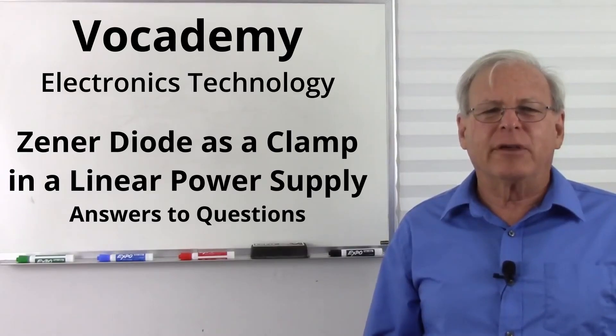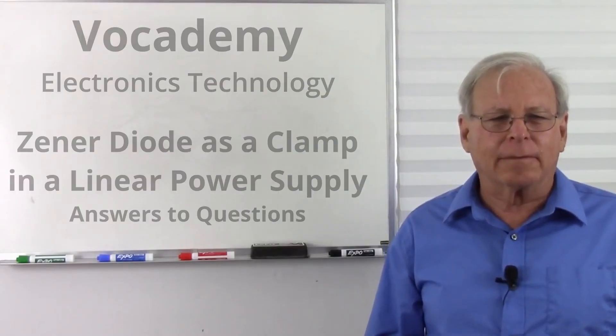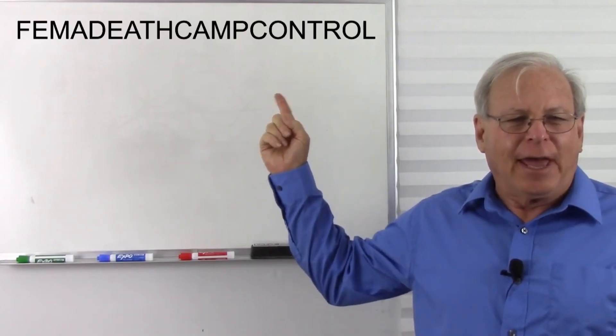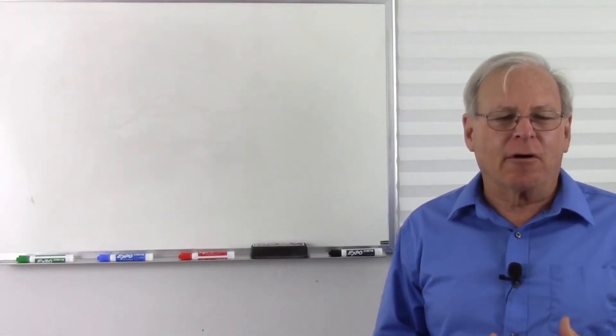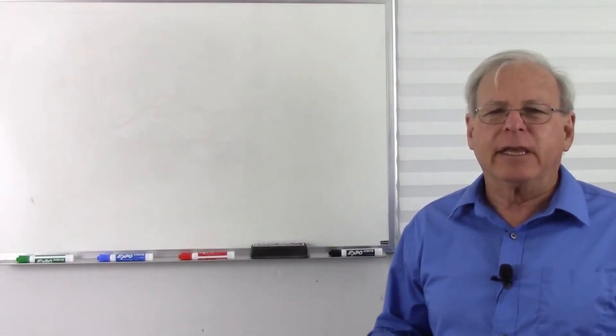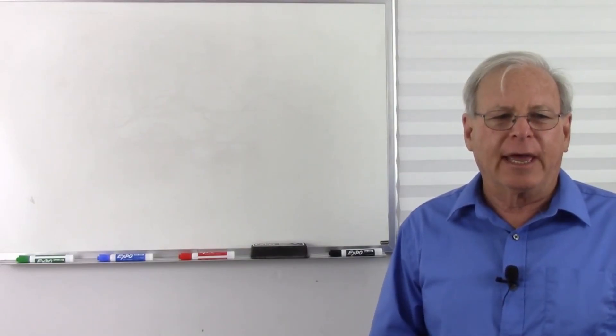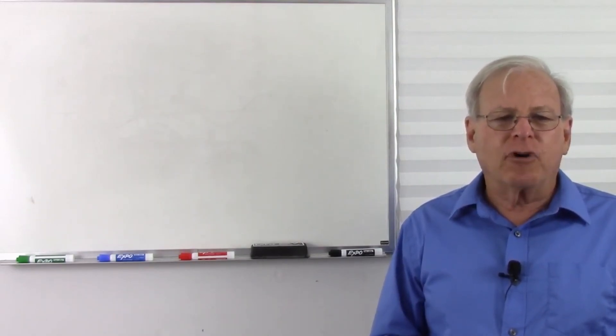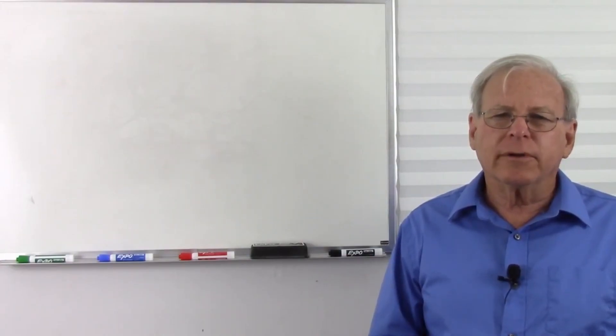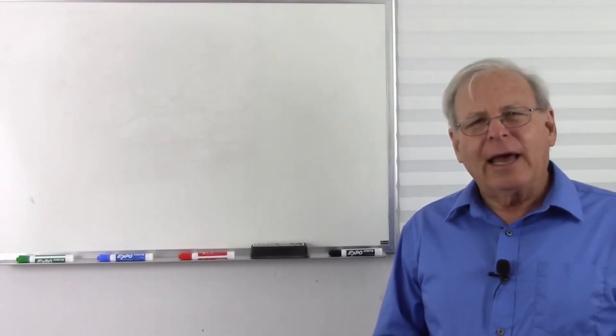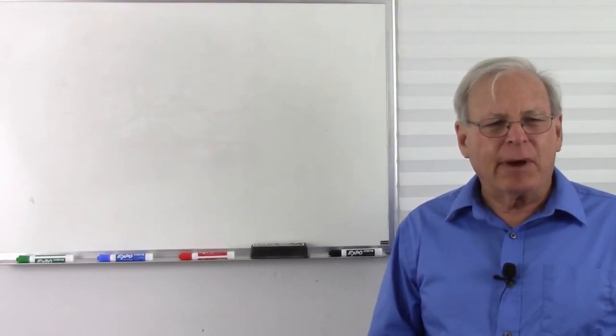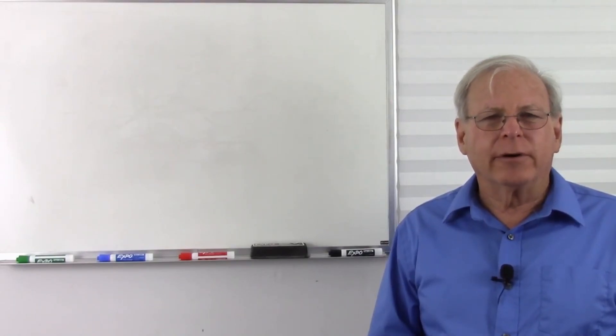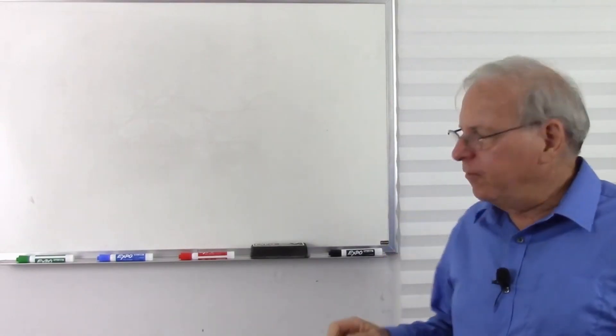Today I'm going to answer a question from a student by the name of Vat. His question is on the video about the need for the Zener diode in the linear power supply. The question is, isn't the Zener there primarily to clamp the voltage from going above 12 volts, not to make up for a drop in voltage due to more load? I think I understand where you're coming from. We might be talking apples and oranges here.